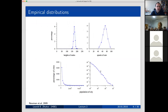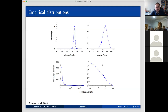If you look at empirical distributions — distributions we measure directly — like the distribution of heights of people or speeds of cars on a freeway, they're typically clustered around some value and come from a Gaussian or normal distribution. That's shown in the top pictures on the slide.